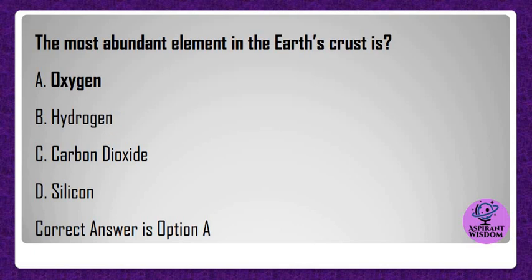The most abundant element in the earth's crust is? A) Oxygen, B) Hydrogen, C) Carbon dioxide, D) Silicon. Correct answer is option A.